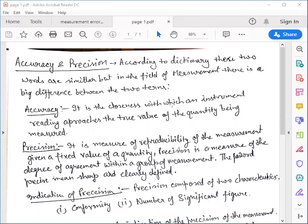These accuracy and precision are similar words according to dictionary, but in the field of measurement they both have different meanings. They both are different terms. So how we differentiate these terms on the basis of measurement? We will discuss here.